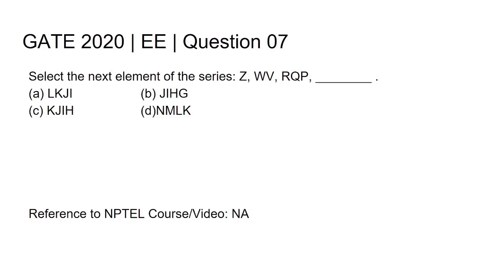Z, WV, RQP, blank. We have four options below: Option A - LKJI, Option B - JIHG, Option C - KJIH, Option D - NMLK.